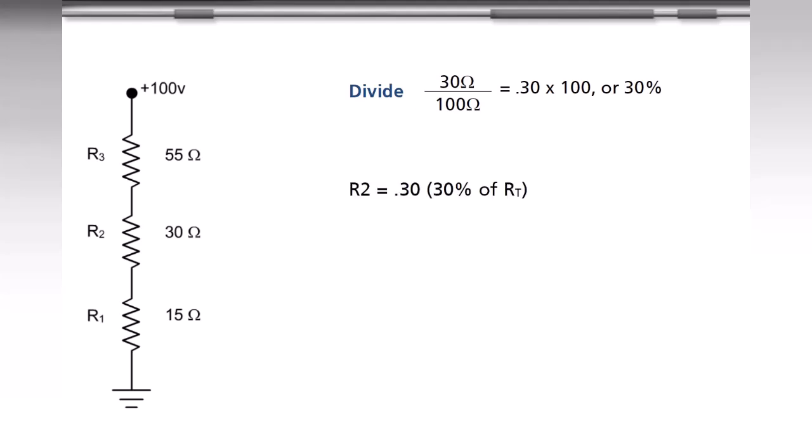Calculate the percentage of R2 to the total resistance and then multiply that percentage by the applied voltage to obtain the voltage across R2.